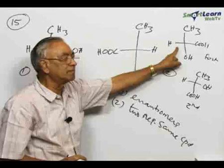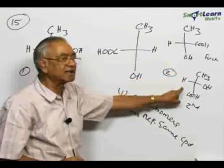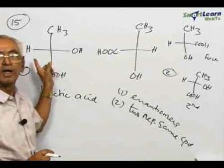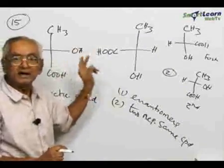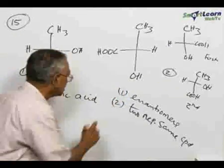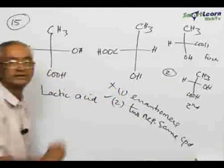By making even number of changes, the two structures become identical. One change we have made here, the second interchange we have made here. After we have made the second interchange, it has become exactly identical with this compound. They are two representations of the same compound, not enantiomers.